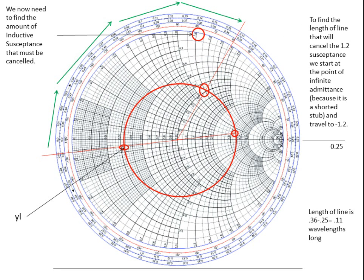We start to walk back from the point of infinite admittance, which is labeled at 0.25. That center line represents resistance and SWR — and in this case, the point of infinite admittance, because we're dealing with a shorted stub. Starting at 0.25, we want to find where the equal but opposite value of 1.2 is. We draw a line out from the center of the Smith chart through that point to the outside, and find it reads a value of 0.36. The distance in wavelengths between 0.36 and 0.25 gives us the stub length: 0.11 wavelengths.